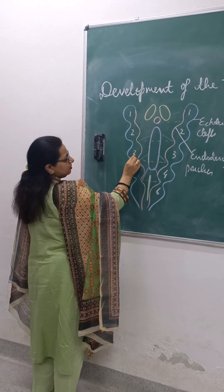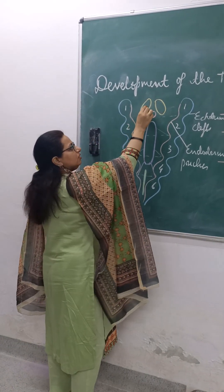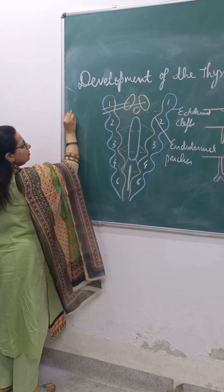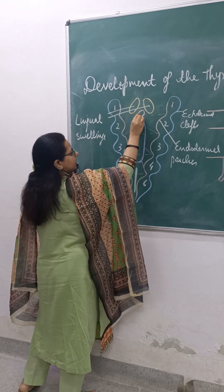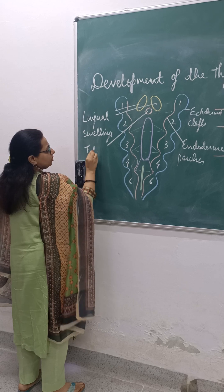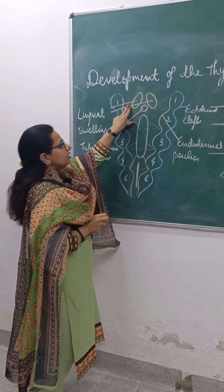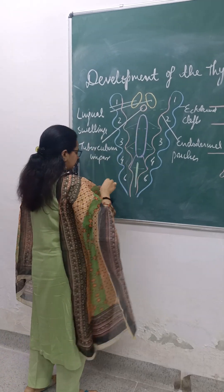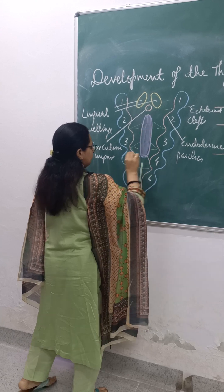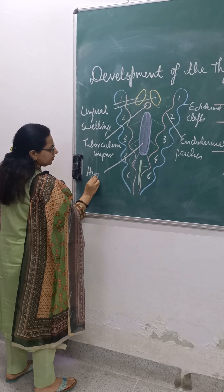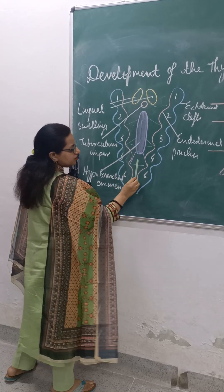Correspondingly there is the first, second, third, fourth, and sixth arch arteries as well. Now in relation to the first arch you can appreciate two lingual swellings shown in yellow. Behind them there is a red coloured area known as tuberculum impar. All three structures are in relation to the first pharyngeal arch. Now there is another structure known as the hypobranchial eminence, and behind it there is the laryngotracheal groove.